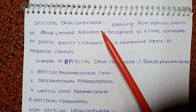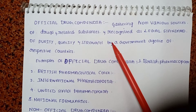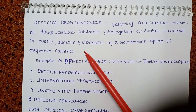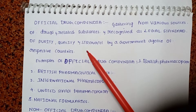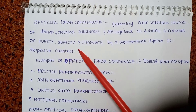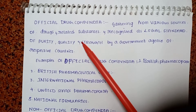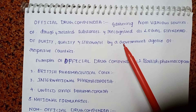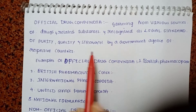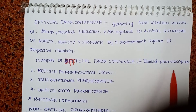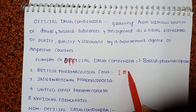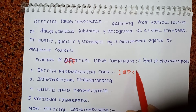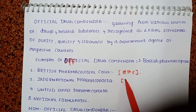Official drug compendia are recognized as the legal standard of purity, quality, and strength by a government agency of respective countries. Examples include the British Pharmacopoeia (BP), British Pharmaceutical Codex (BPC), and International Pharmacopoeia (IP).